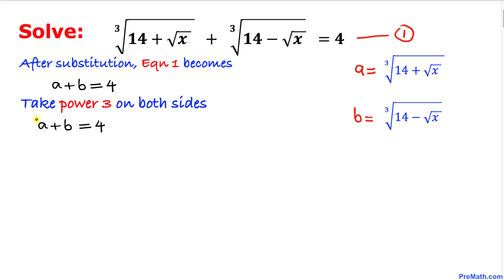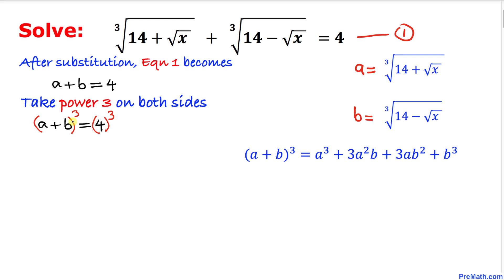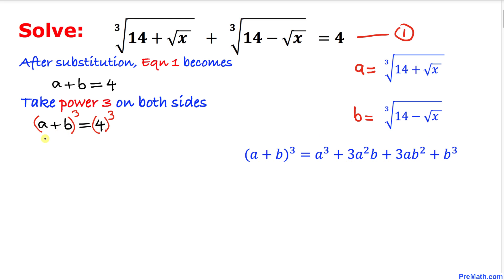Now we are going to take the power of 3 on both sides. To expand the binomial on the left hand side we will use the cubic formula. Expanding, this gives: a³ plus 3a²b plus 3ab² plus b³ equals 4³, which is 64.